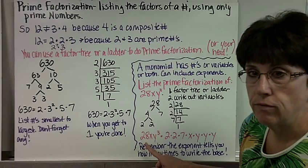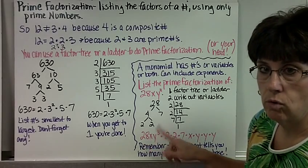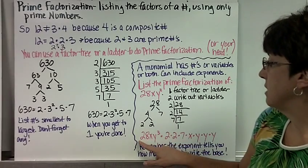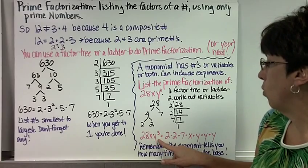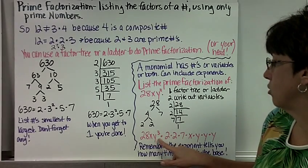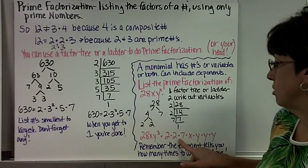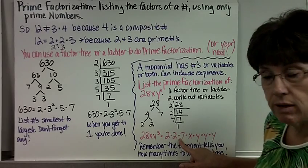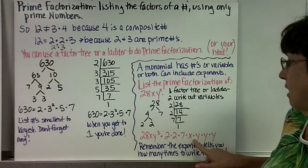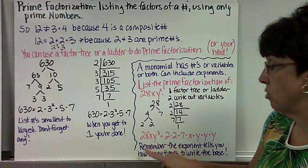So I don't worry about the variables when I'm doing the ladder or the tree. I say 28xy³ or y to the third power equals 2 times 2 times 7, and then I just list my variables, x and 3 y's, because it's y to the third.